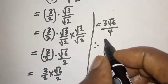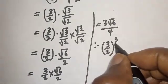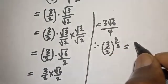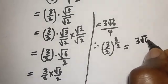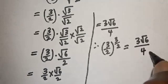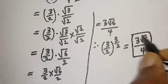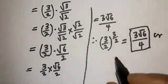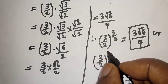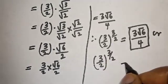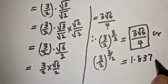Therefore, three over two to the power of three over two is equal to three root six over four. This is the final answer. Or equivalently, three over two to the power of three over two is equal to 1.837.